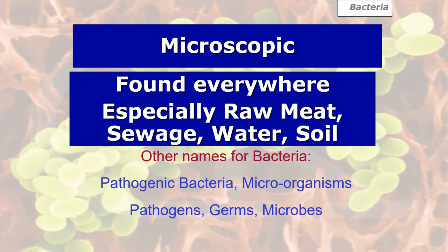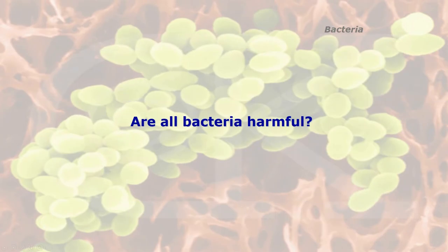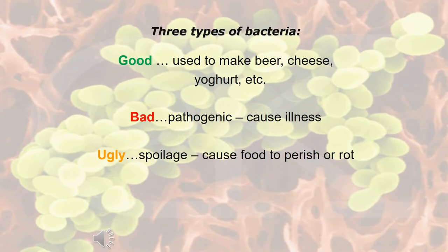A question that could come up: what is a pathogen? The answer is bacteria that cause illness and can possibly kill. Pathogenic bacteria are the bad ones. The word 'germs' is commonly used for bad bacteria, while 'microorganisms' and 'microbes' relate to all bacteria, good and bad. So are all bacteria harmful? No — there are three types.